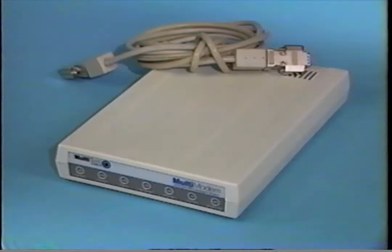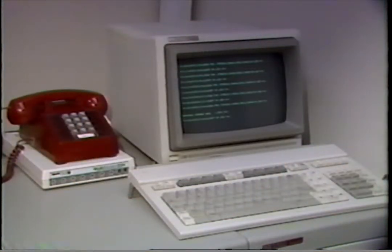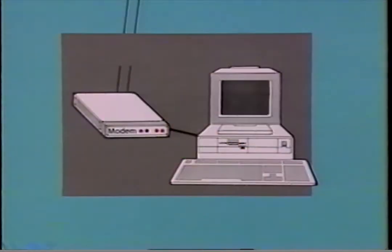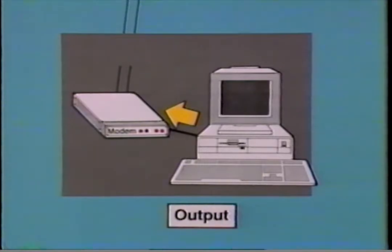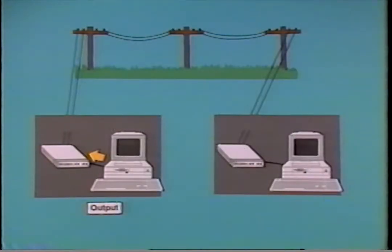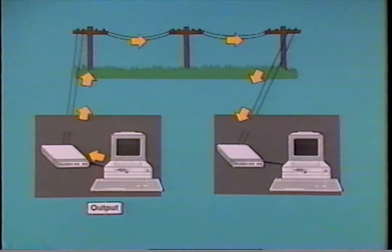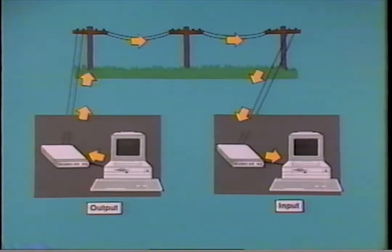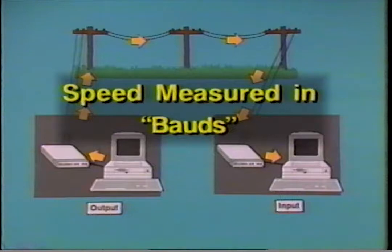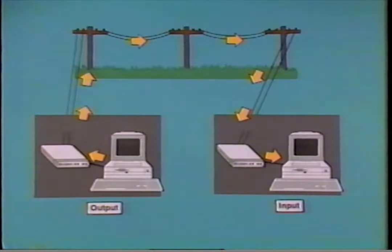A modem lets you input and output information over a telephone line — some modems are outside the computer, some are built in. Here's how a modem works: your computer outputs information to the modem; the modem changes the information to sounds and sends them over a telephone line; a modem on the receiving end changes the sounds back to information and inputs it to another computer. The speed at which a modem works is measured in a unit called a baud — the higher the baud number, the faster the modem can input and output information.